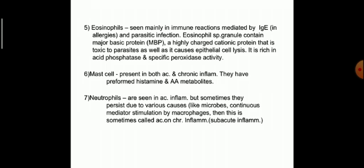Mast cells are present in both acute and chronic inflammation; they have preformed histamine and arachidonic acid metabolites. Neutrophils are seen in acute inflammation but sometimes persist due to microbes or continuous mediator stimulation by macrophages. This is sometimes called acute-on-chronic inflammation, or sub-acute inflammation.